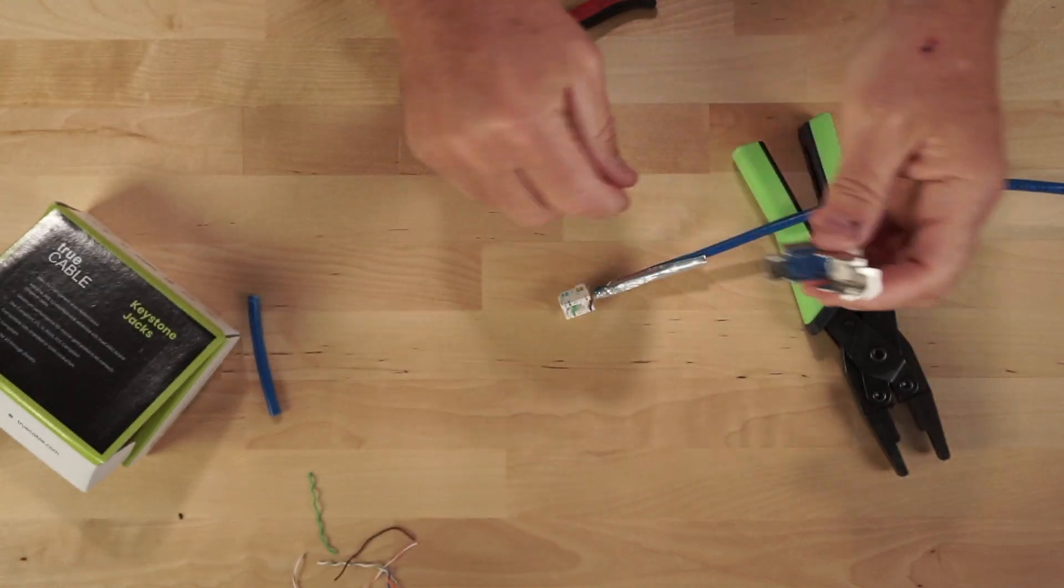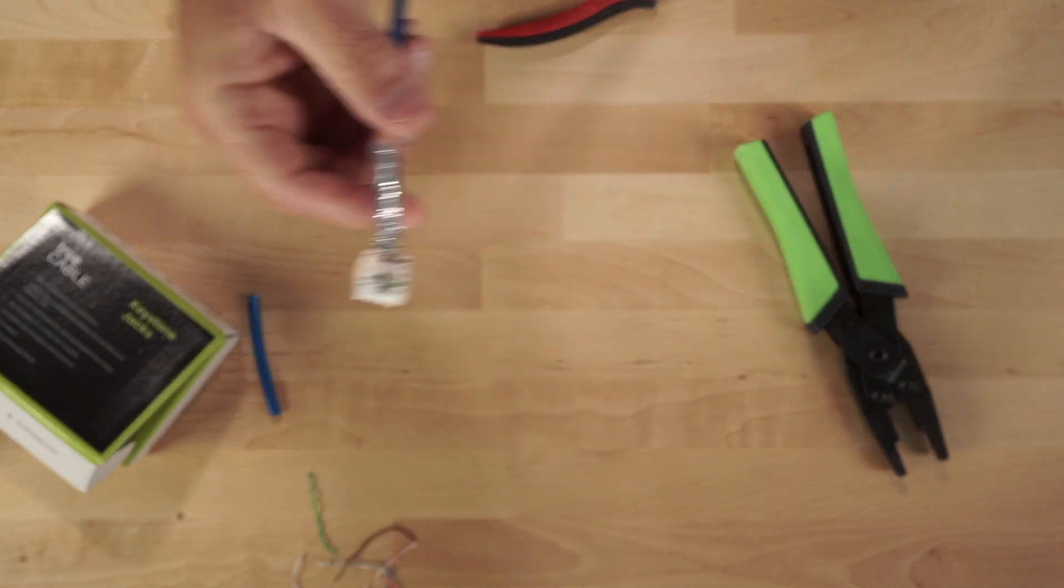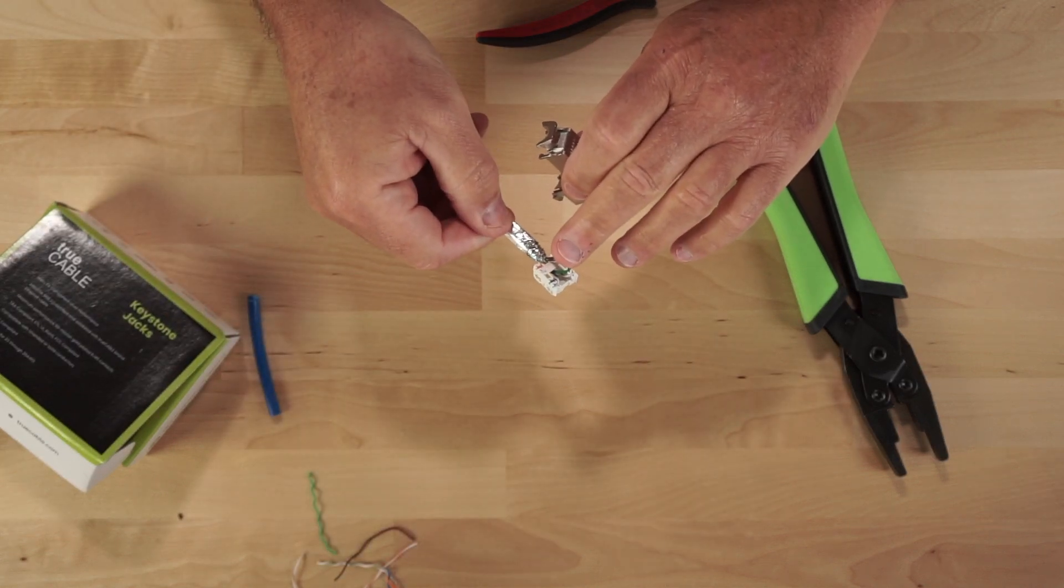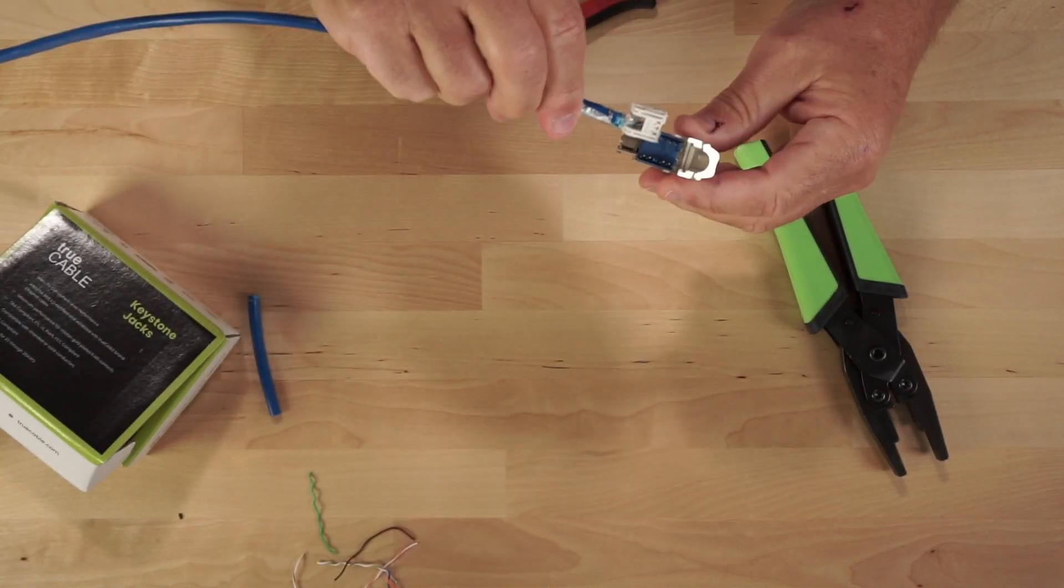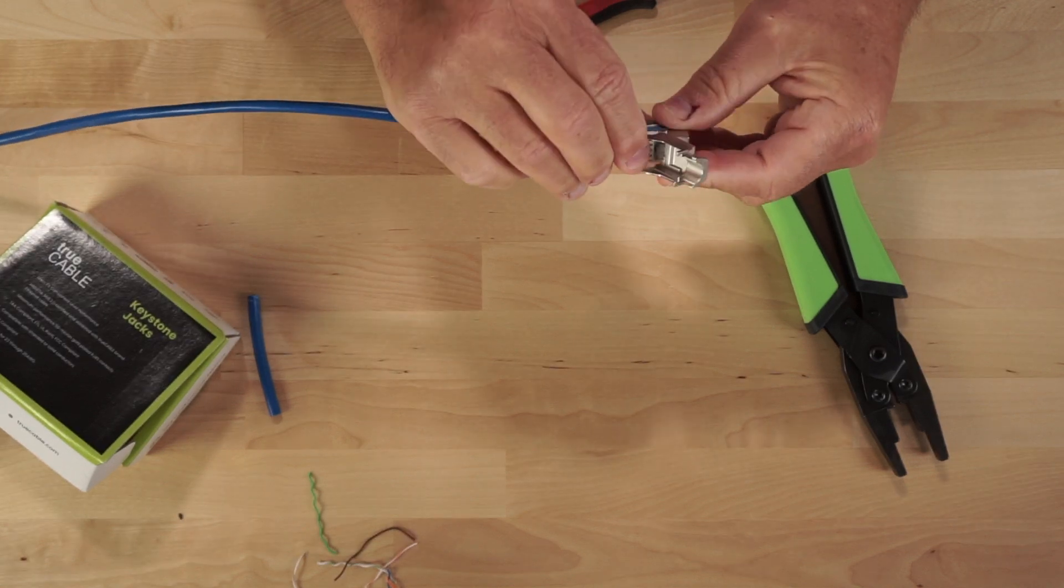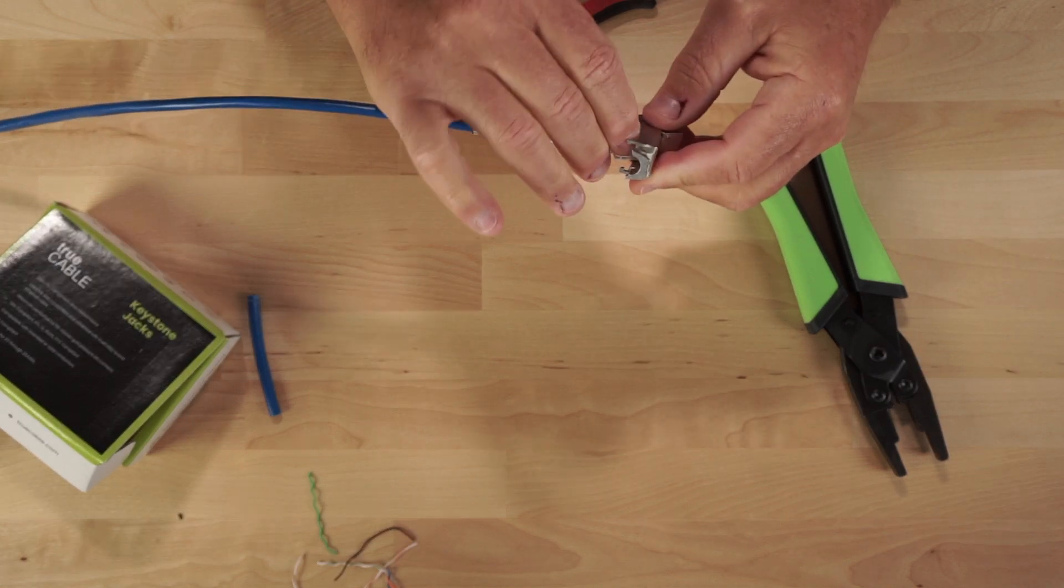And now we'll take the jack and we're going to place the cables facing down into the jack. It only fits one way. Make sure you have it in there pretty well.